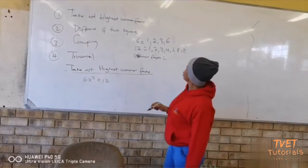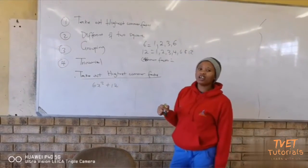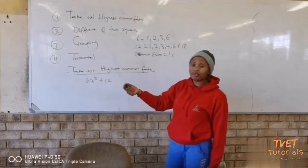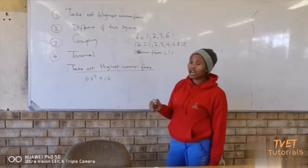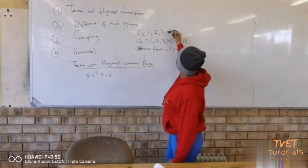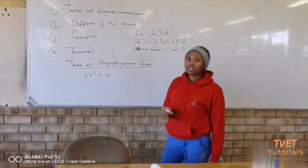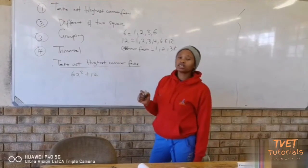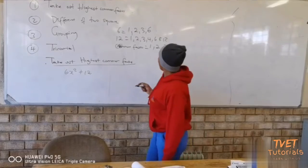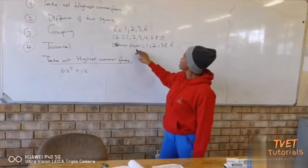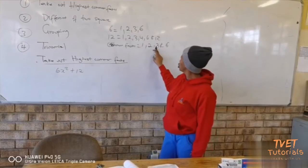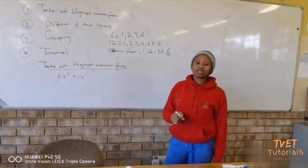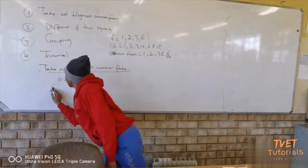We found 1 in factors of 6 and also 1 in factors of 12, so 1 is a common factor. We also found 2 in factors of 6 and 12, so 2 is a common factor. We found 3 in factors of 6 and 12, so 3 is a common factor. And lastly, we found 6 in factors of 6 and 12, so 6 is a common factor. The common factors between 6 and 12 are 1, 2, 3, and 6, but the highest common factor is 6.